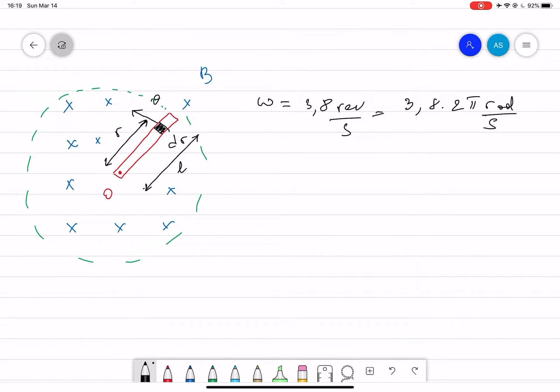The plane of rotation of the rod is perpendicular to a uniform magnetic field. B is into the page with a value of 1.3 Tesla. Calculate the EMF induced across the end of the rod.